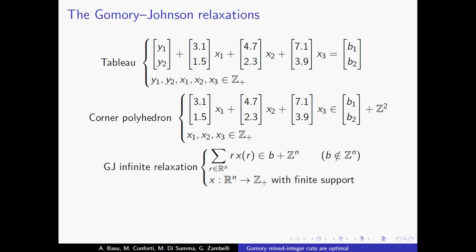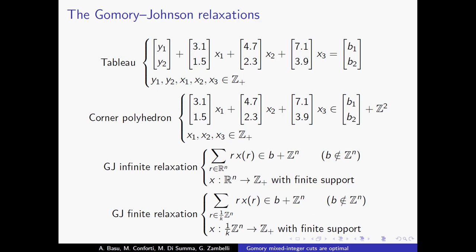There is also a discretized version of this infinite relaxation called the finite relaxation, where you only consider columns that are integer multiples of 1/k. For instance, if all columns are multiples of 0.1 = 1/10, you take k equal to 10 and study only those corner polyhedra in which the columns are multiples of 1/10. We will play with both these relaxations.